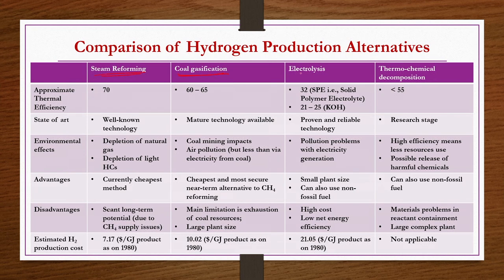A comparison of hydrogen production alternatives covers four methods: steam reforming of hydrocarbons, coal gasification, electrolysis, and thermochemical decomposition. Each is assessed on thermal efficiency, state of the art, environmental effects, advantages, disadvantages, and estimated H2 production cost. Steam reforming has the highest efficiency at 70%, is well-known technology, is currently the cheapest method at $7.17/GJ (as of 1980), but has CH4 supply limitations.